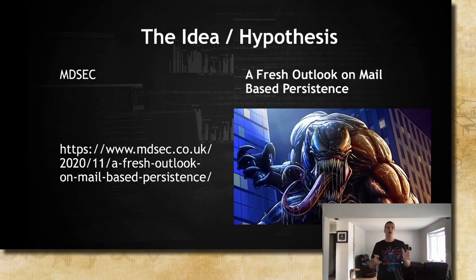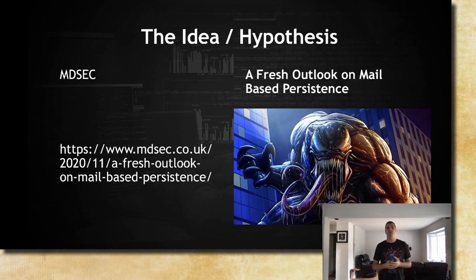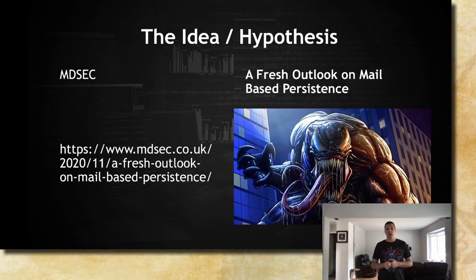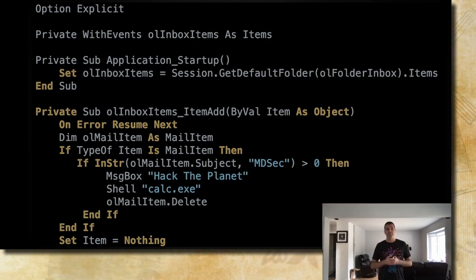For this talk, I'm going to use one example. Our idea will be a blog post from MDSEC called 'A Fresh Outlook on Mail-Based Persistence.' If you haven't read it, here's the link — it's a great article by Dominic Schell. The TL;DR is that you can create persistence via Outlook: when you receive an email with specific keywords, some actions will be performed via VBScript. This is the VBA project OTM file with sample code from the article.